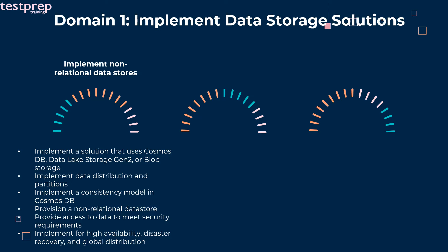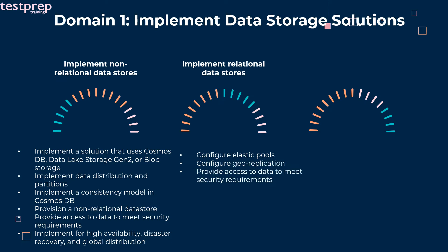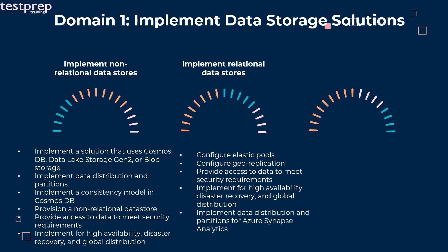Sixth, implement for high availability, disaster recovery, and global distribution. Number two: implement relational data stores. It contains six subtopics. First, configure elastic pools. Second, configure geo-replication. Third, provide access to data to meet security requirements. Fourth, implement for high availability, disaster recovery, and global distribution. Fifth, implement data distribution and partitions for Azure Synapse Analytics. Sixth, implement Polybase.